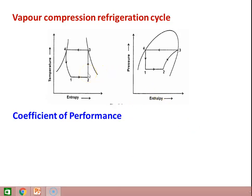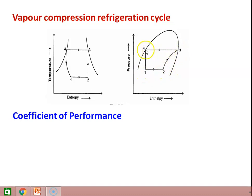So, the vapor compression refrigeration cycle — we just review the basic equations to solve the problem. 1 to 2 is constant pressure evaporation in the evaporator. 2 to 3 is isentropic compression in the compressor. 3 to 4 is constant pressure heat removal in the condenser. And 4 to 1 is throttling expansion. All four processes are also given in the pressure enthalpy diagram: constant pressure process, compression process, constant pressure condensation, and constant enthalpy expansion.